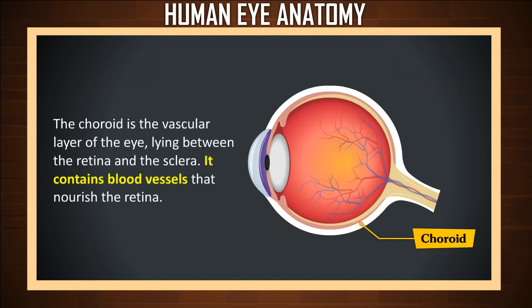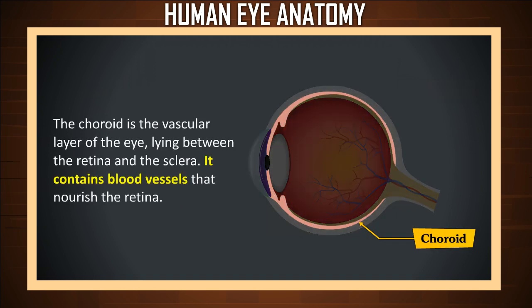Choroid. The choroid is the vascular layer of the eye, lying between the retina and the sclera. It contains blood vessels that nourish the retina.